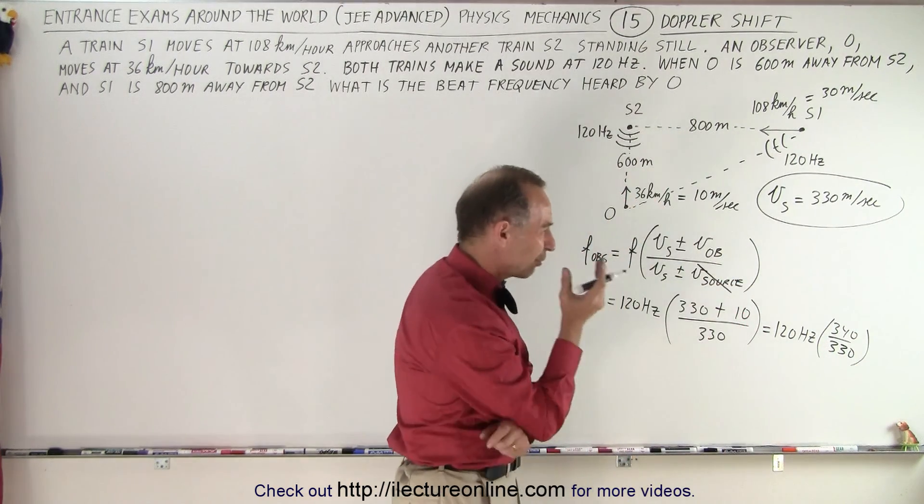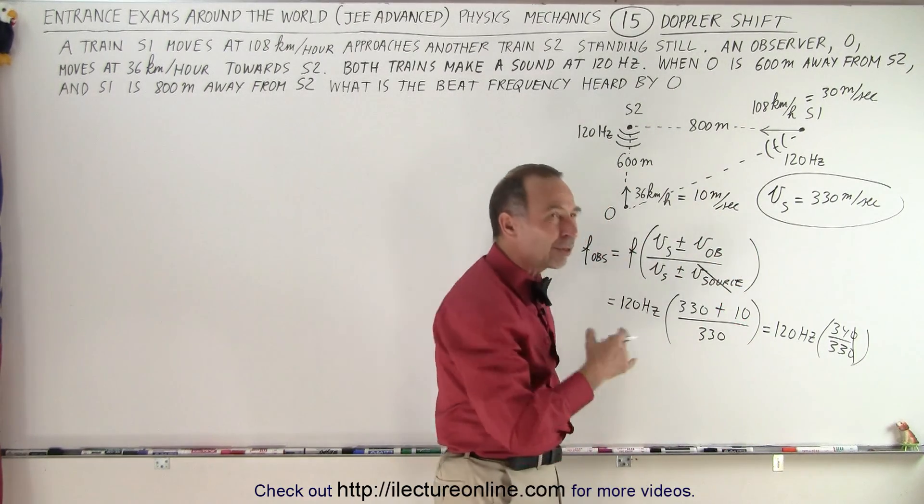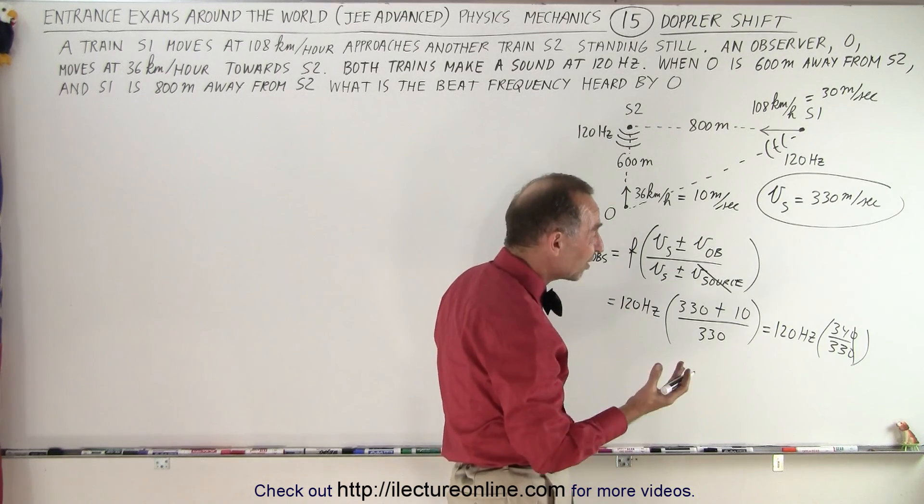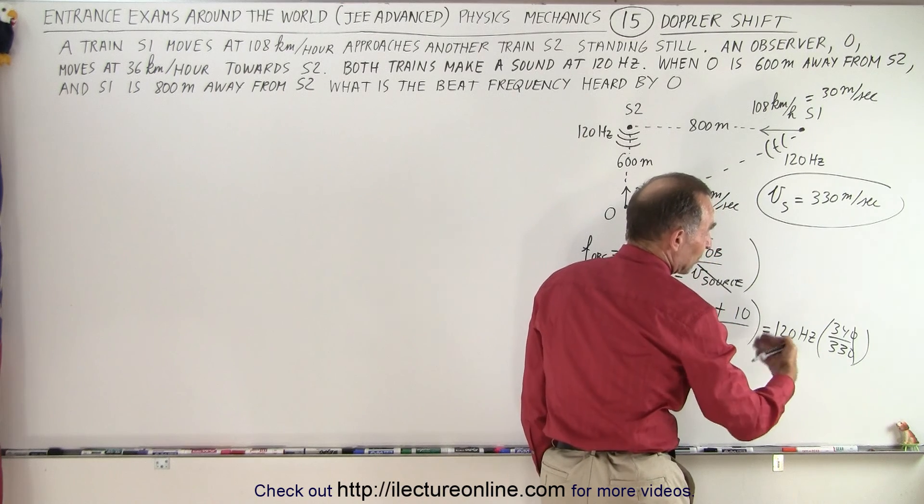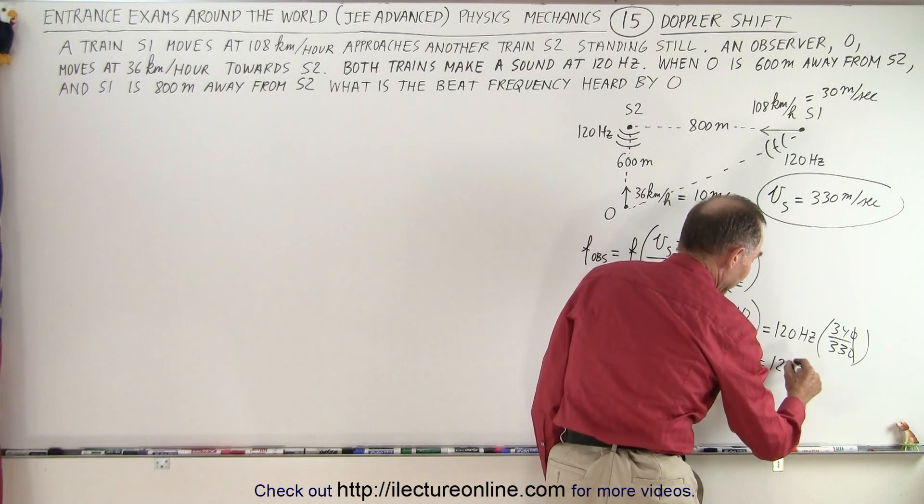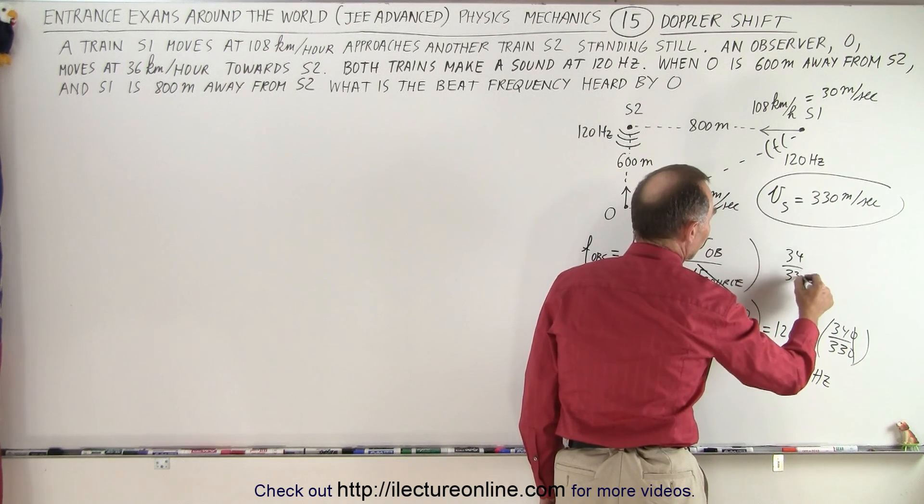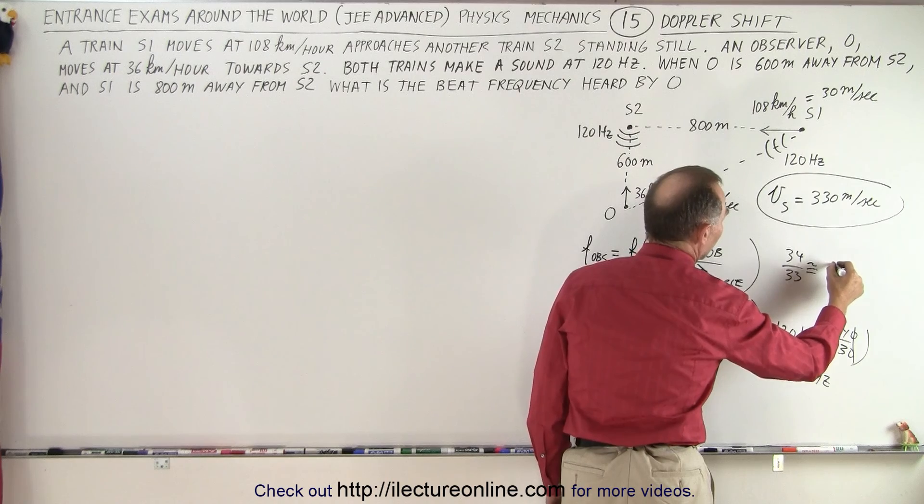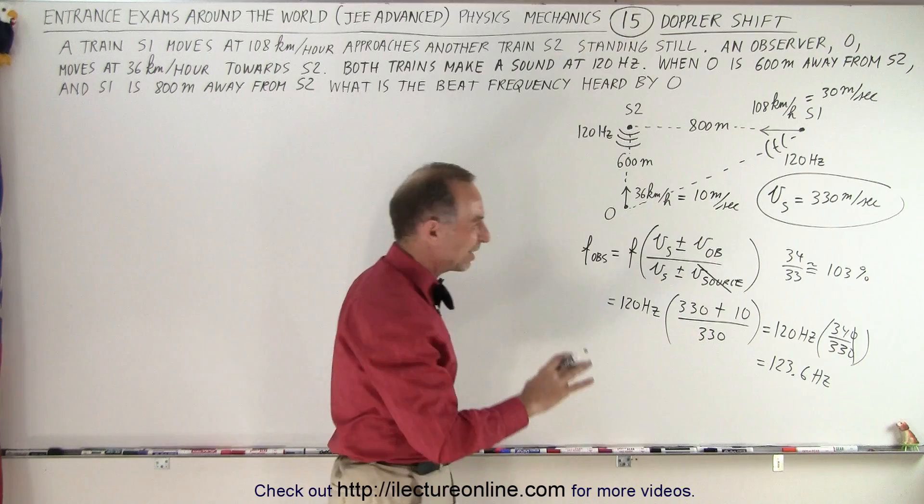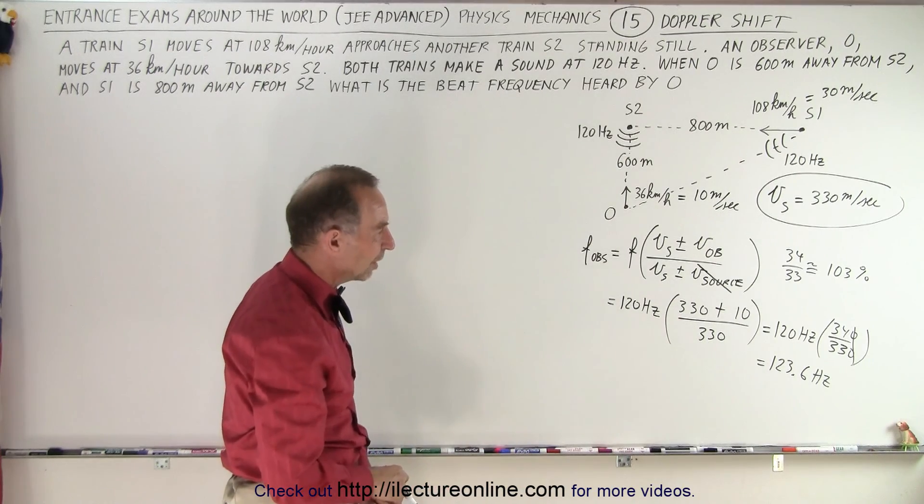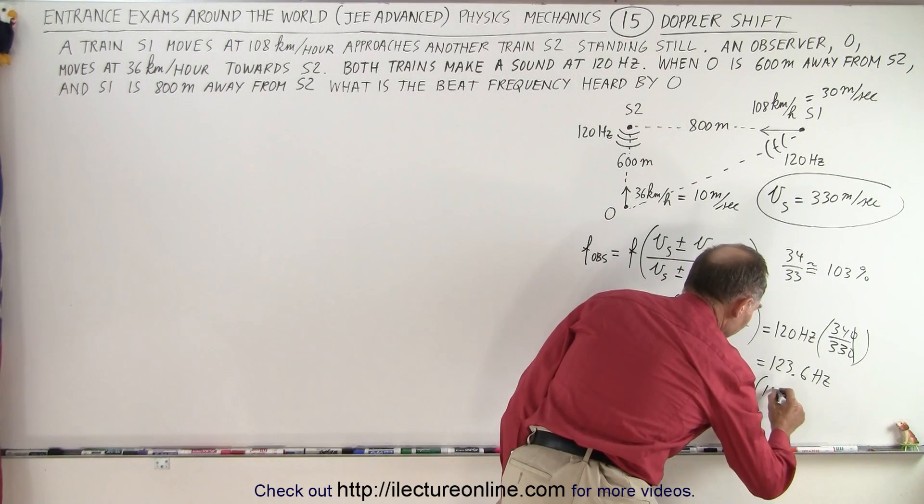Now, what is the ratio of 340 over 330? The zeros can go away. You can see that 1 divided by 33, that's about 3%, and 3% of 120 hertz, that's about 3.6 hertz, so we see 123.6 hertz, because 34 over 33 is approximately 103% or 1.03. So we hear about a 3% increase in the frequency, about 3.6 hertz. We can write that off to about 124 hertz.